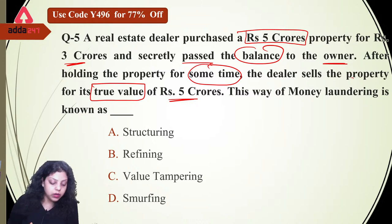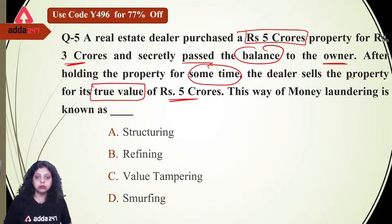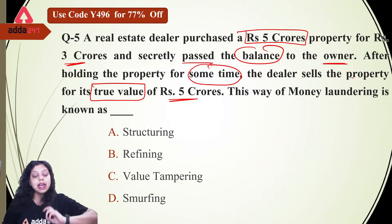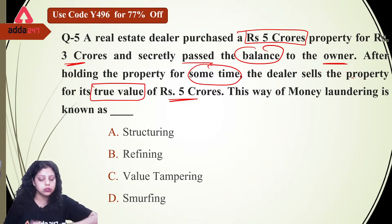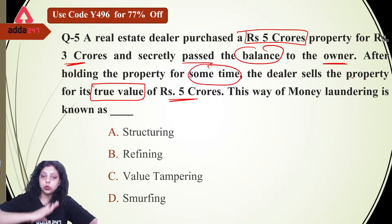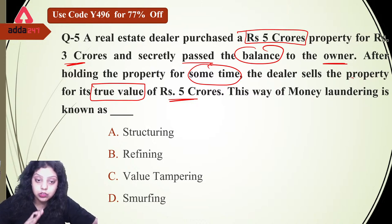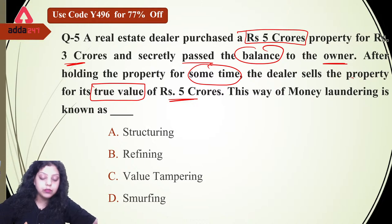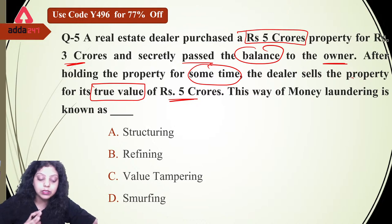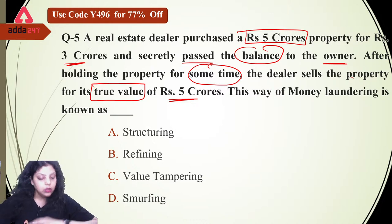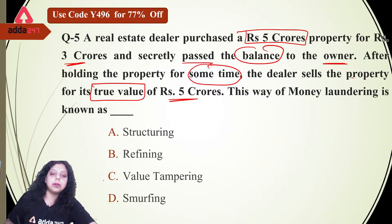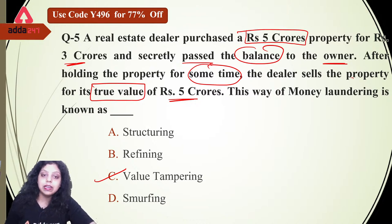The right answer is C, value tampering, because this person has done value tampering and paid the amount secretly to the owner. You can easily identify the answer by reading the question — the questions are based on logical thinking and practical scenarios, and can also be part of a case study. For the AML and KYC certification, you must try to understand the concepts logically.